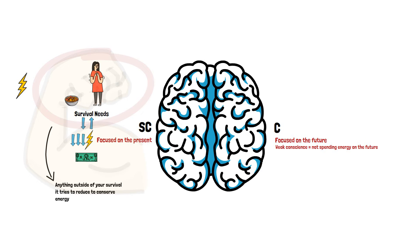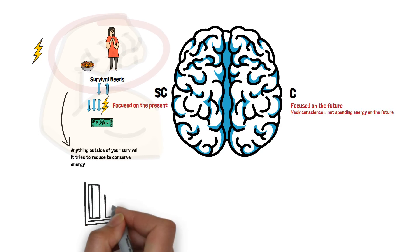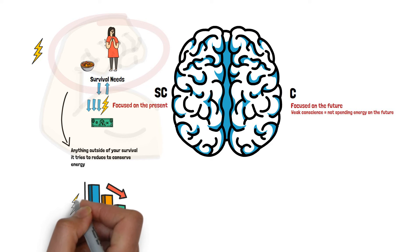This compounds over time, creating a downward spiral where all you are doing is reserving energy, which is surviving, but it's nowhere near living your best life.